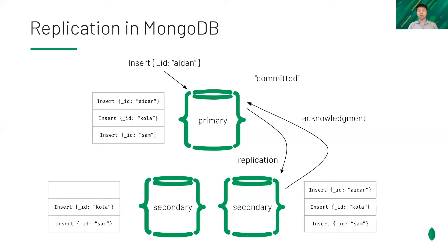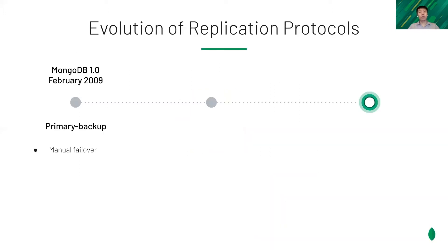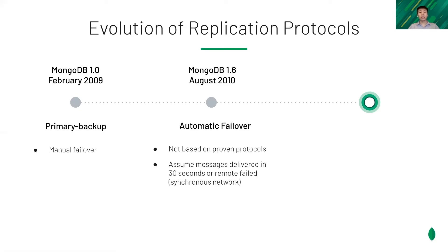Then the write acknowledges the client. A committed entry is safe through any minority failures, providing fault tolerance. The replication in MongoDB has evolved through three protocols. From the very beginning, MongoDB supported a primary-backup replication scheme, which requires manual failover if the primary is down. Very early in its development, MongoDB started to support automatic failover.